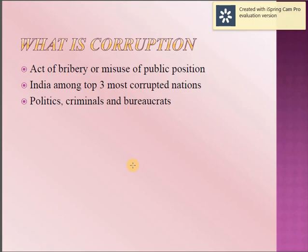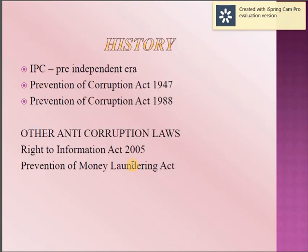Let's see about the history of this act. Before the independence era, corruption cases were tried on the basis of IPC. Then in 1947, the Prevention of Corruption Act was enacted. After that, an amendment was made and the Prevention of Corruption Act 1988 was enacted.